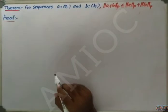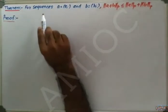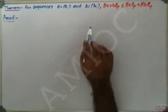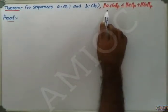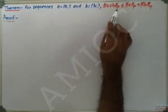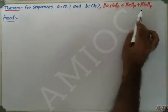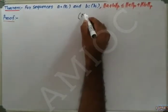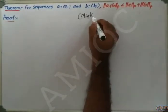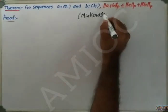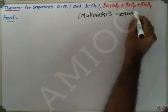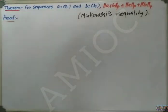Hi friends, today we are discussing a theorem for sequences. Let a = (a_i) and b = (b_i). We have the norm of a plus b with respect to p is less than or equal to norm a_p plus norm b_p. This is known as Minkowski's inequality.